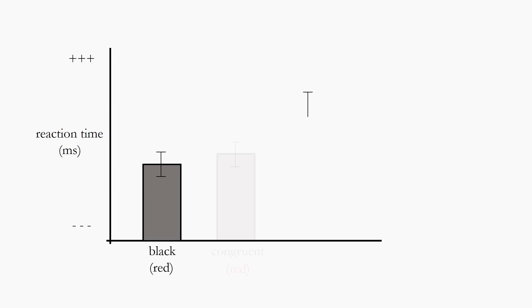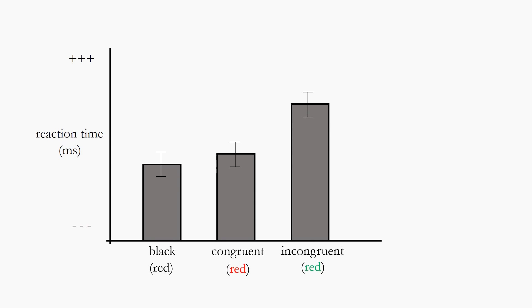The more interesting results that we're looking for are these congruent trials, whenever the word and the color match up. You can see that these results are basically the same as if the font was presented in black. But the plot thickens whenever we look at incongruent trials, or in other words, whenever the word and the color do not actually match. We see that it takes much longer for someone to react to that, much longer for someone to be able to say what that color actually is.